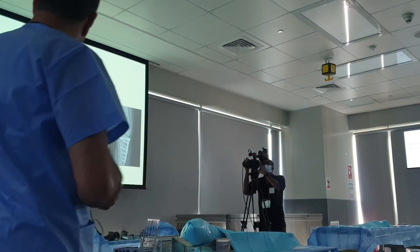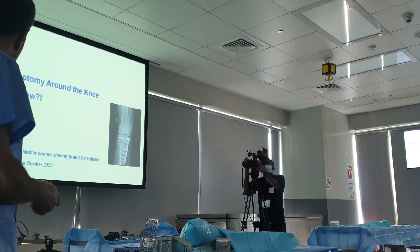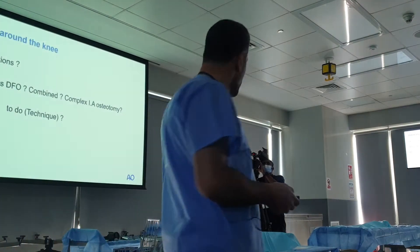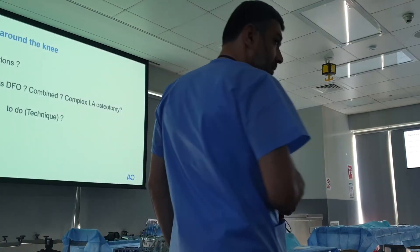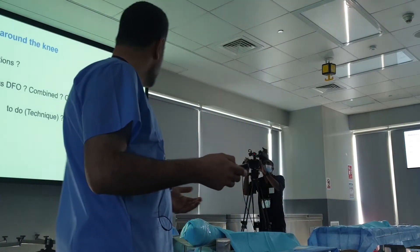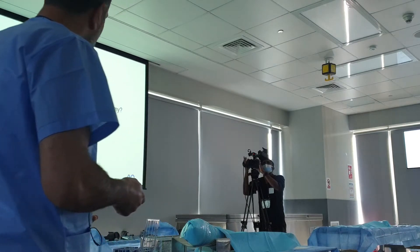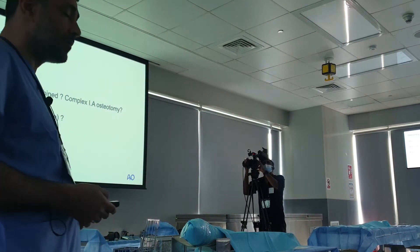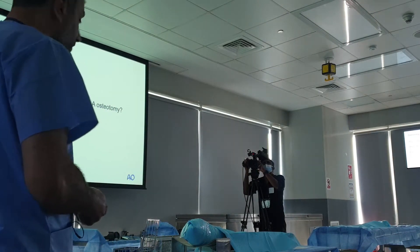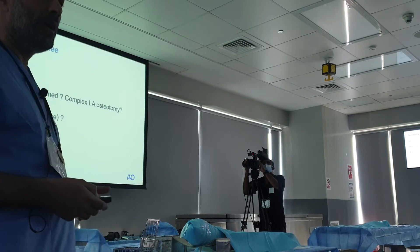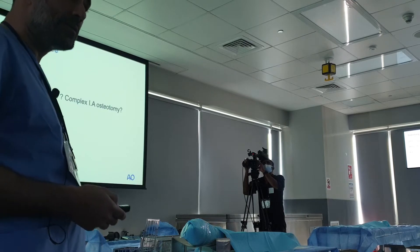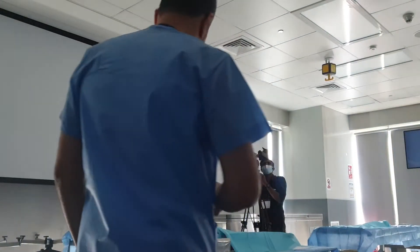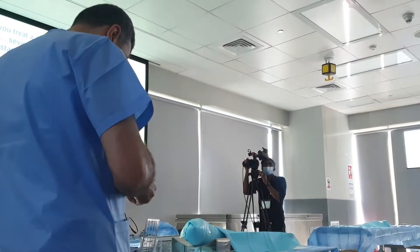Peri-articular osteotomy around the knee: when, where, and how to do it. 'When' means indication. 'Where' refers to whether it's high tibial, distal femoral, combined, or intra-articular osteotomy. And 'how' is how to plan and how to perform these types of osteotomy.